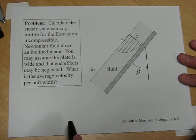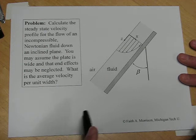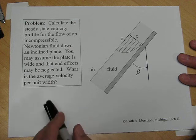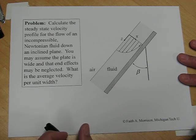Calculate the steady state velocity profile for the flow of an incompressible Newtonian fluid down an incline plane. You may assume the plate is wide and that end effects may be neglected.